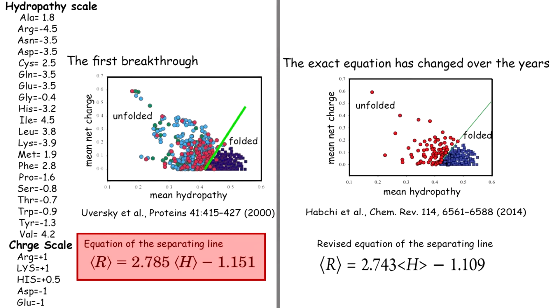Of course, with the availability of new experimental data, the exact equation of the Uversky line has changed over the years. The most recent version that we know was published in 2014 in Chemical Reviews journal and you can see the revised equation of the Uversky line on the right hand side. Let me finish this discussion by telling you about two exciting facts.